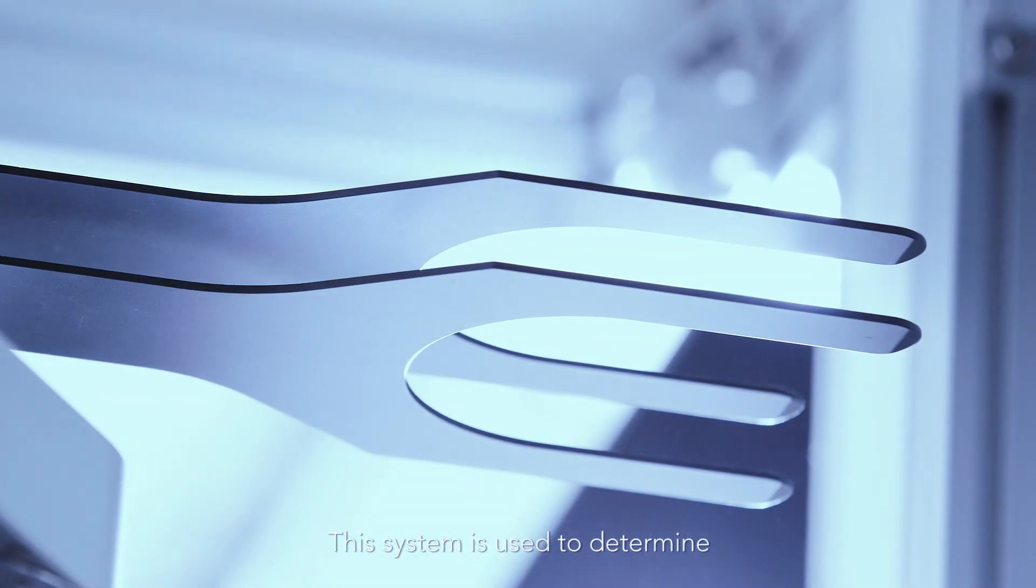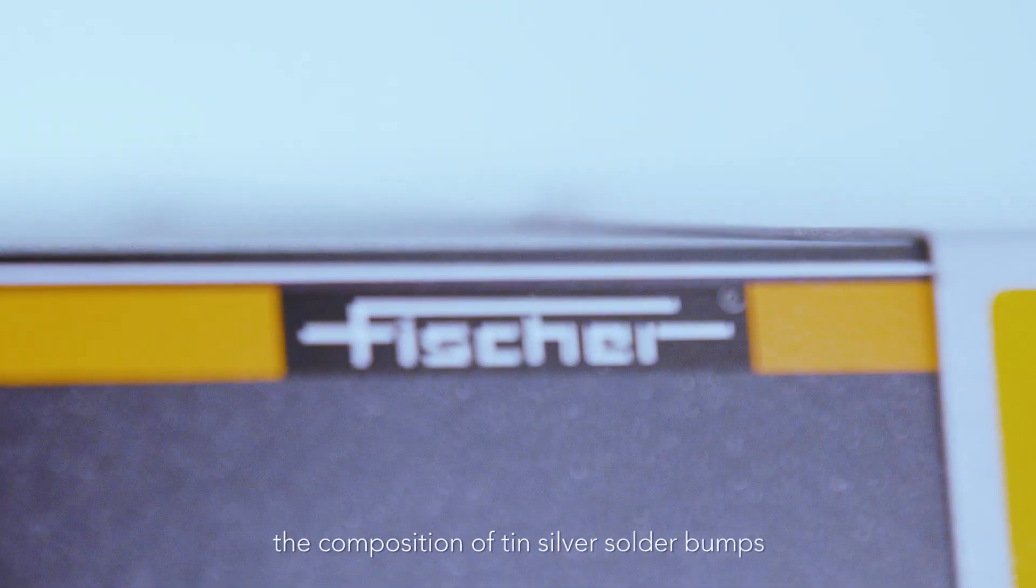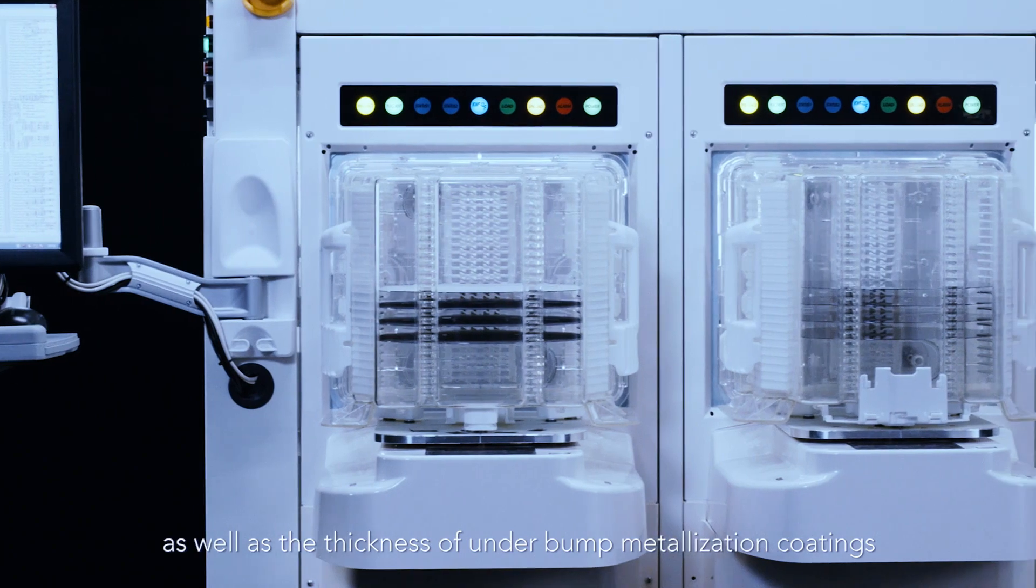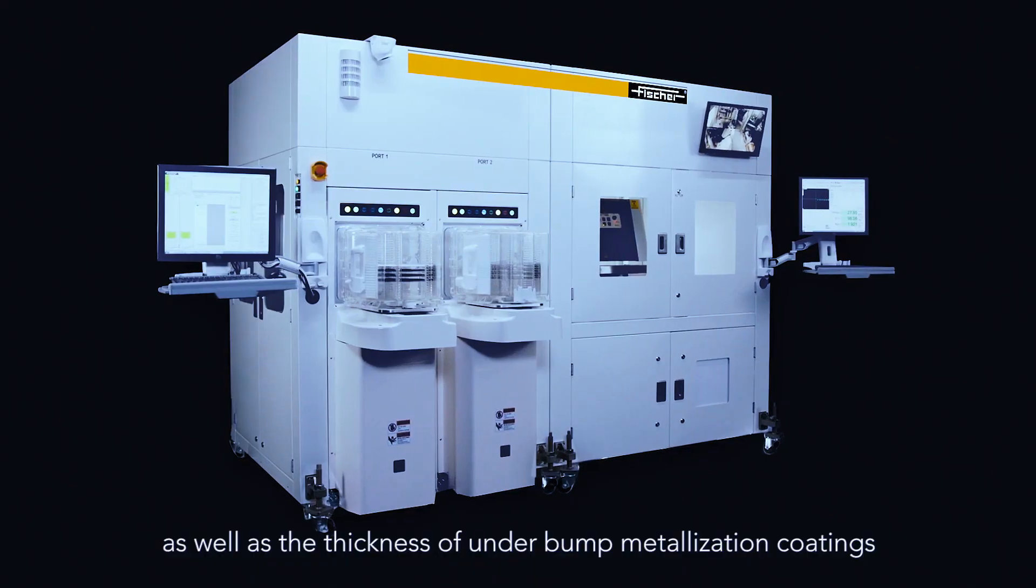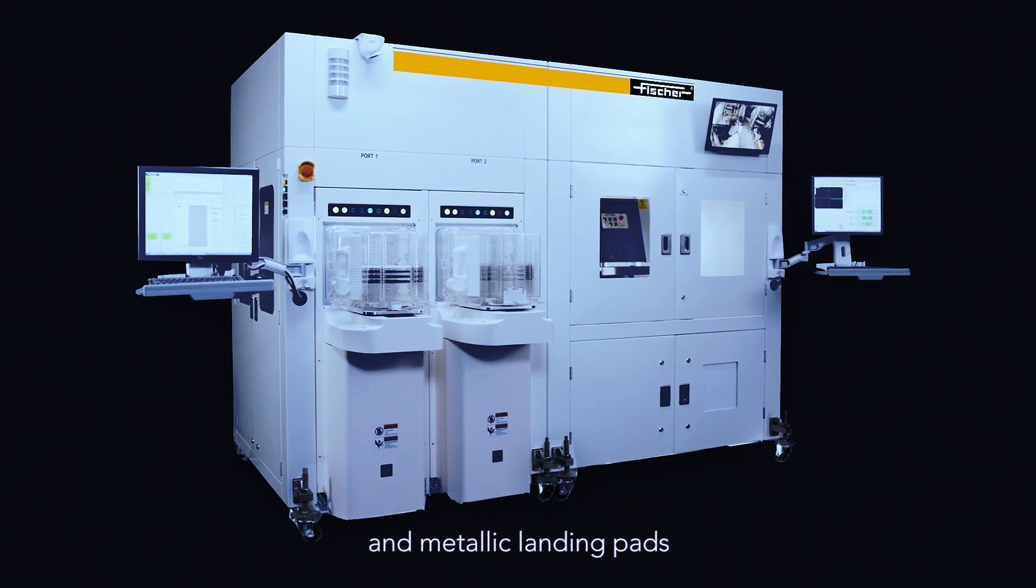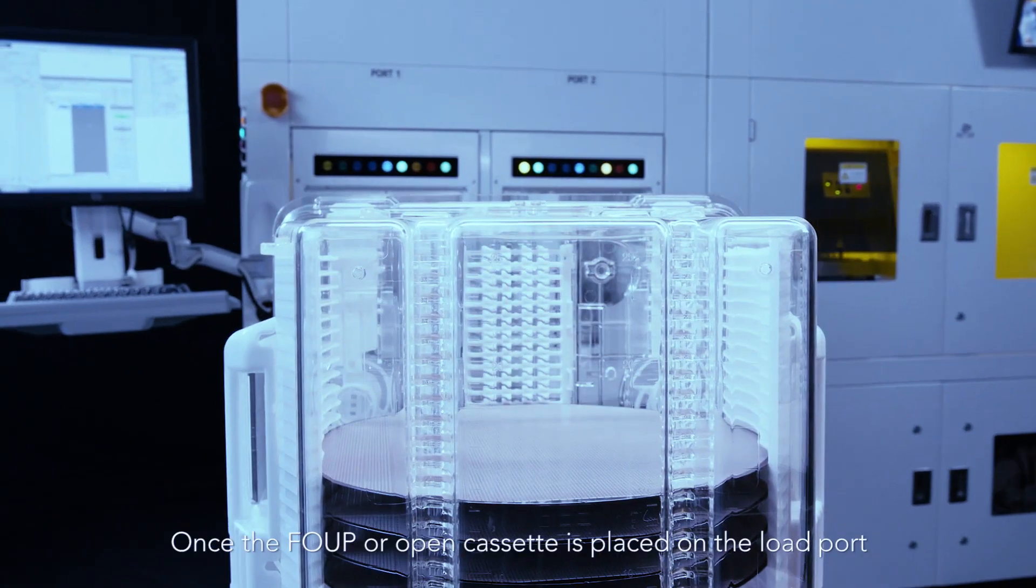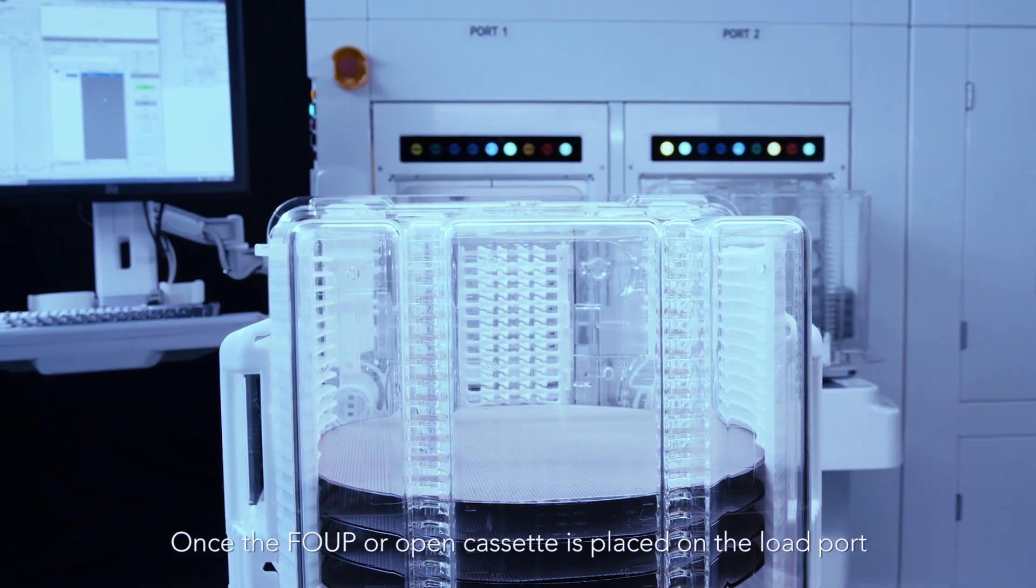This system is used to determine the composition of tin silver solder bumps, as well as the thickness of underbump metallization coatings and metallic landing pads. Once the FOUP or open cassette is placed on the load port, the system will read its ID.